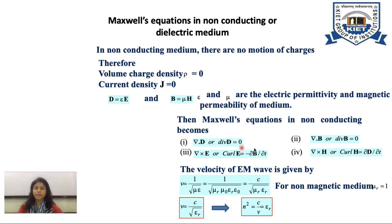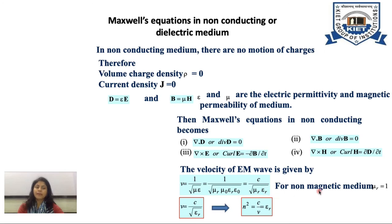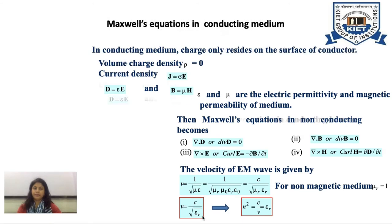The velocity of EM wave in non-conducting medium is v equals 1 over square root of mu epsilon, where mu equals mu_r times mu naught and epsilon equals epsilon_r times epsilon naught. Therefore v equals c over square root of mu_r epsilon_r. For non-magnetic medium where mu_r equals 1, v equals c over square root of epsilon_r. The refractive index n equals c/v equals square root of epsilon_r, so n squared equals epsilon_r.